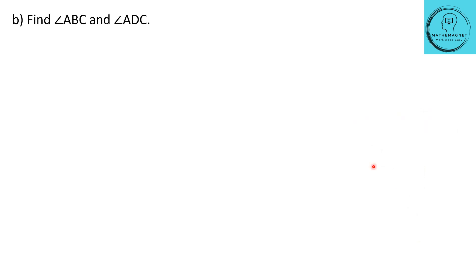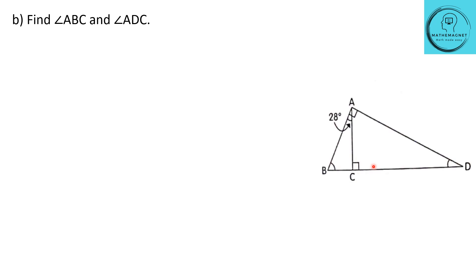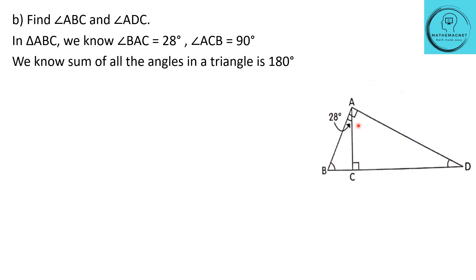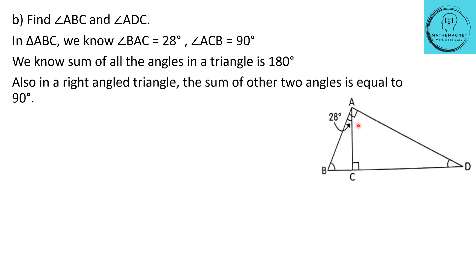The next question: find angle ABC and angle ADC. The triangle given has angle BAC equal to 20 degrees, angle BAD equal to 90 degrees, and angle ACD equal to 90 degrees. In triangle ABC, angle BAC is 20 degrees and angle ACB is also 90 degrees, since ACD is 90 degrees and BD is a straight line. We know the sum of all angles in a triangle is 180 degrees, so in triangle ABC the sum of the other two angles is 90 degrees.